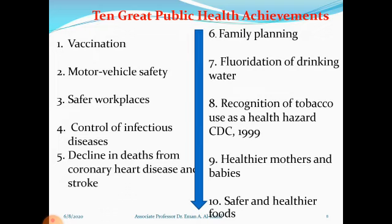The control of infectious disease is achieved not only by vaccination but also by health education and protection from different types of diseases. Decline in death from coronary heart disease and stroke has been achieved by lifestyle modification, including healthy diet to reduce calorie and fat intake, increased consumption of vegetables and fruits, increased physical activity, and smoking prevention.